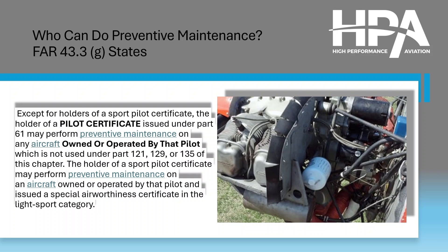Now who can do preventive maintenance? FAR 43.3 states that except for holders of a sport pilot certificate, the holder of a pilot certificate issued under Part 61 may perform preventive maintenance on any aircraft owned or operated by that pilot. Of course, if it's used under Part 121, 129, or 135, you can't do preventive maintenance on those aircraft. The holder of a sport pilot certificate may perform preventive maintenance on an aircraft owned or operated by that pilot and issued a special airworthiness certificate in the light sport category — so only on light sport aircraft.